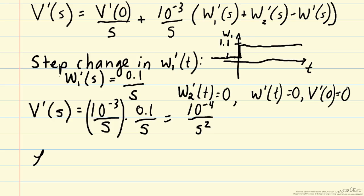Now we can perform the inverse Laplace transform and we would do this by looking up the term 1 over s squared in the Laplace transform table. And then we can solve for v prime of t equals 10 to the minus 4, we can pull out that coefficient times t.